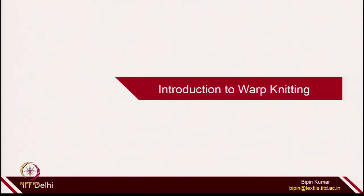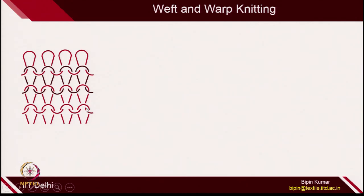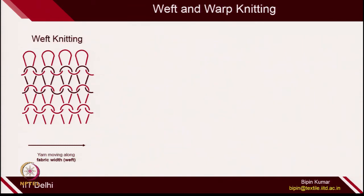What do you mean by warp knitting? In week number 1, I gave a small hint comparing two types of knitting technologies: weft knitting and warp knitting. In weft knitting, which we have covered in many lectures, the yarn is moving from left to right or right to left — along the fabric width, which in woven fabric technology we call the weft direction. That is why this type of knitting is called weft knitting.